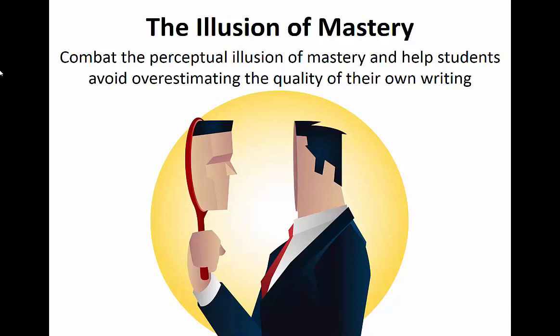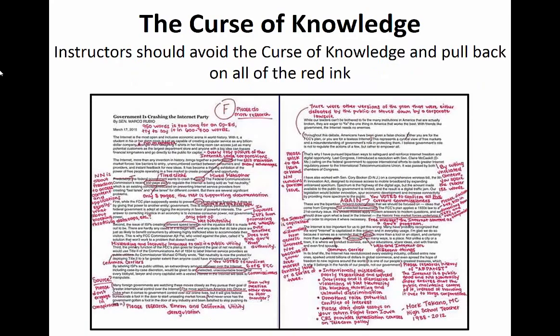In the composition classroom, this may take the form of a fluency illusion in which writers overestimate the quality of their own writing. However, it is not always effective for the instructor to be the one who corrects this illusion of mastery.